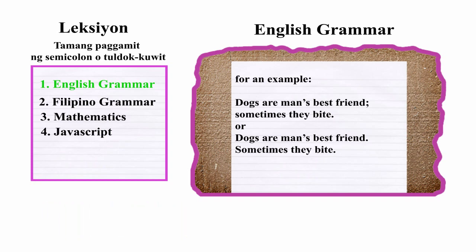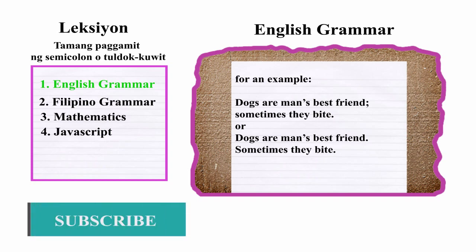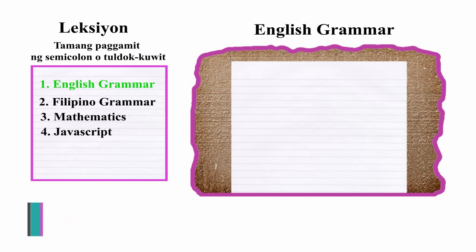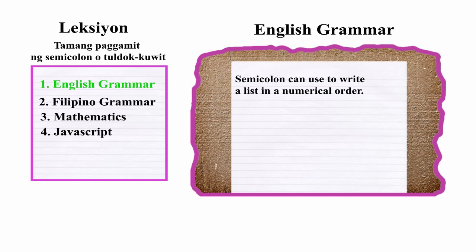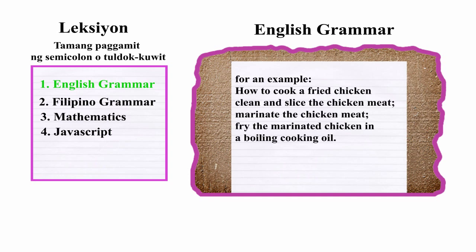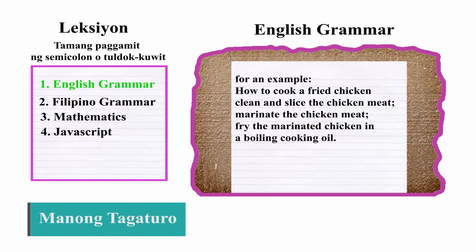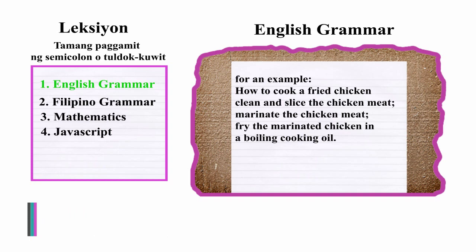The differences are it separates the sentences, creates a pause effect, and has a negative reaction at the end. It can also be used to write lists or procedures in a numerically arranged format. For example, how to cook fried chicken: clean and slice the chicken meat; marinate the chicken meat; fry the chicken in boiling oil.